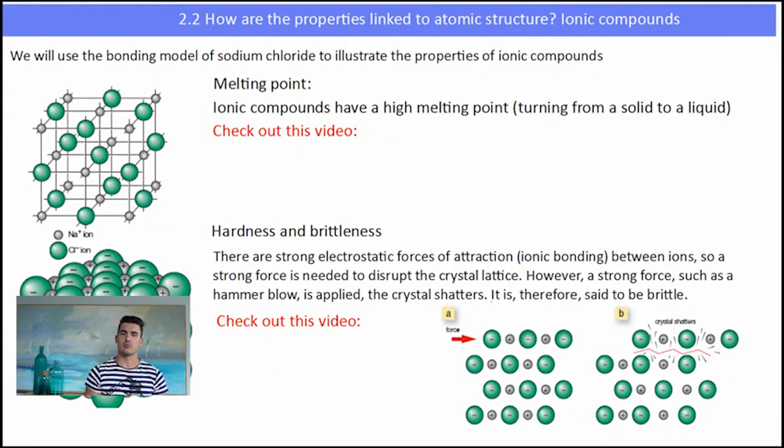Okay, we need to talk about some of the properties. And the first property is the melting point. So how do we use the model to describe the melting point? And we're going to use sodium chloride as an example. So the sodium ones are the little silver ones and the chloride ones are the big green ones. So I'm going to let you have a quick look at this video.